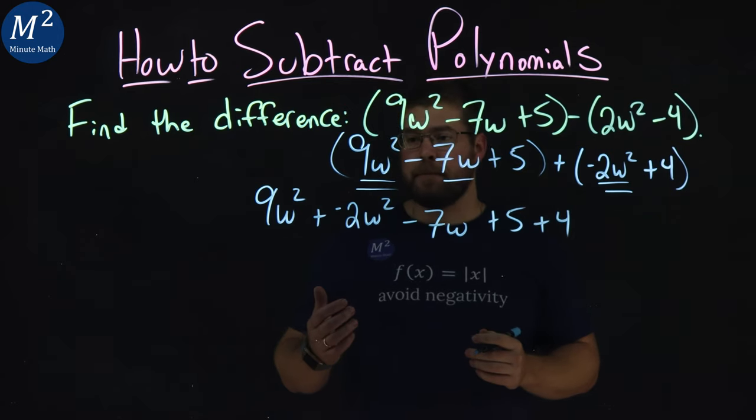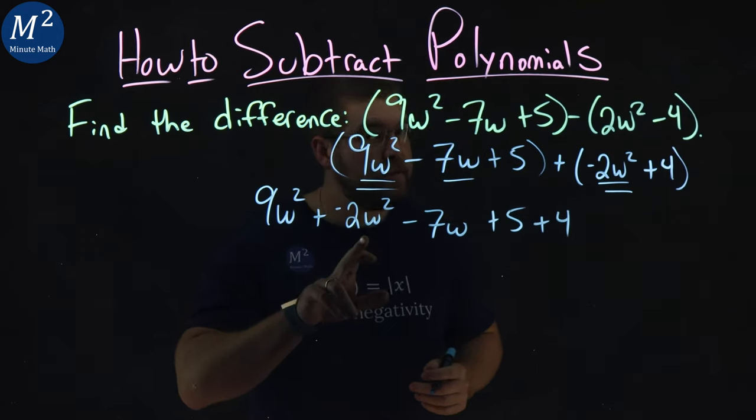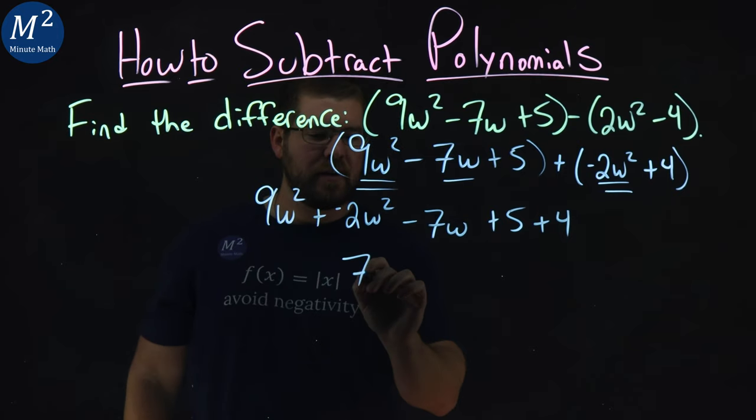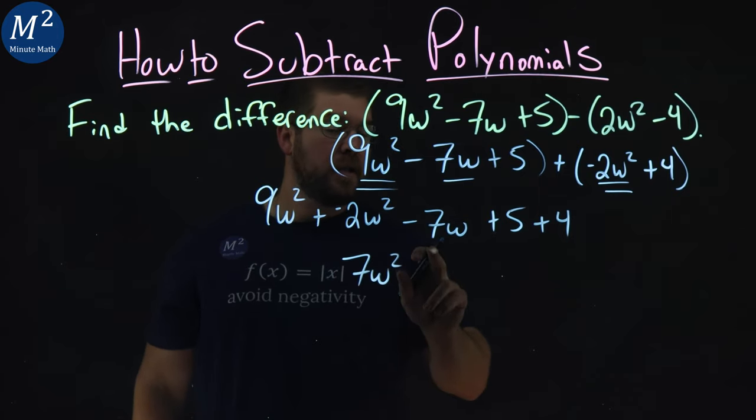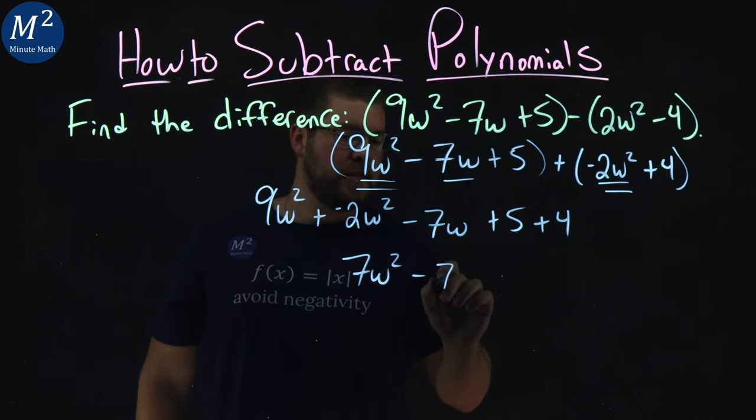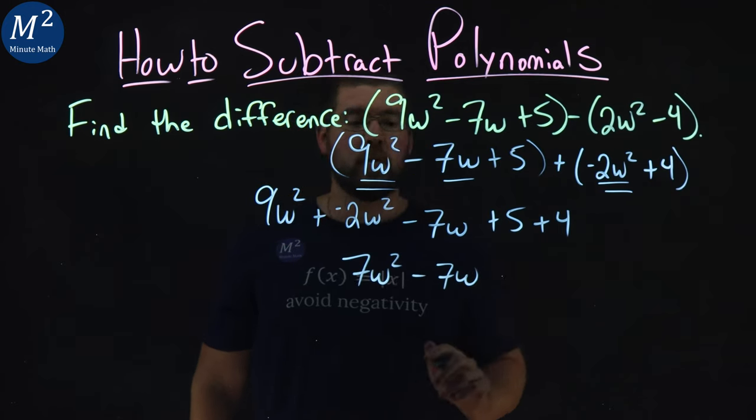Now we can simplify. 9w squared plus negative 2w squared is 7w squared. 7w is by itself here, so we have minus 7w, and 5 plus 4 is 9.